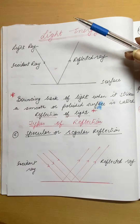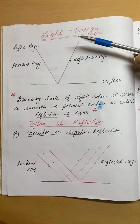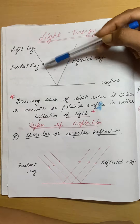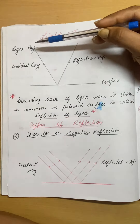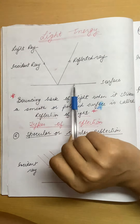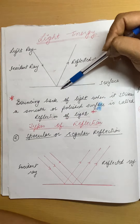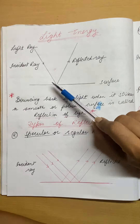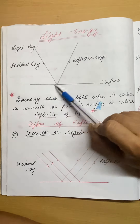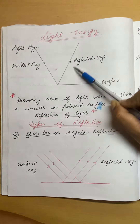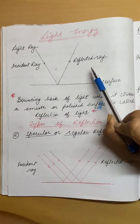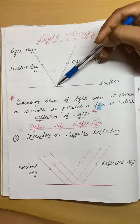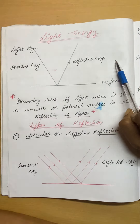First of all we will study different rays of light. Here you are seeing a diagram where I have made a ray of light. This ray of light is coming from the sun and falls on the surface — this light is called the incident light or incident ray. This ray strikes the surface and bounces back, and this returned light is called the reflected light or reflected ray.